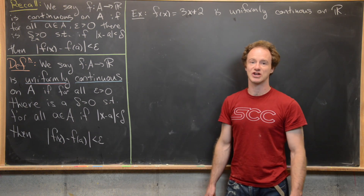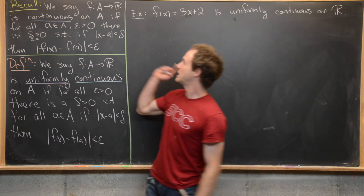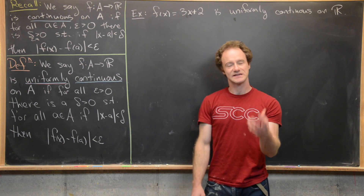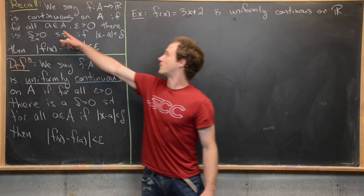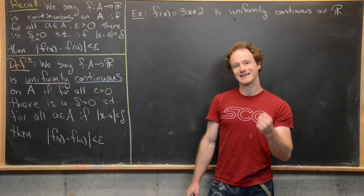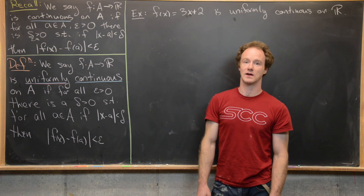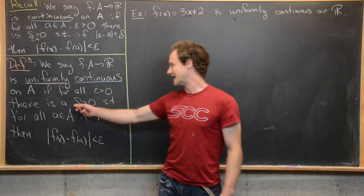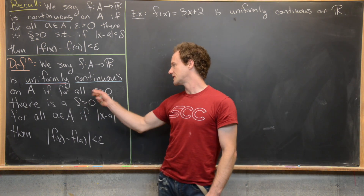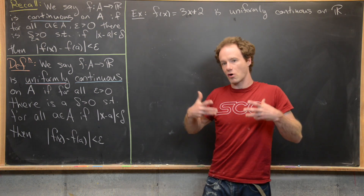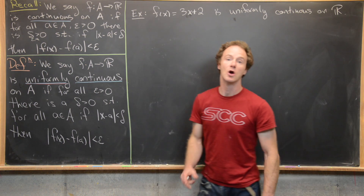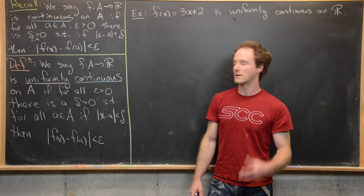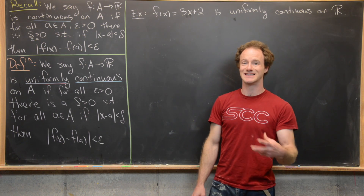Notice there's been an exchange in the order of quantifiers. In the continuity definition, we said 'for all a in A and epsilon greater than zero, there is a delta' — so delta is allowed to depend on a and epsilon. But now we only have 'for all epsilon' before the existence of delta, so this delta is only allowed to depend on epsilon. The delta is brought into existence before we even talk about what point we're checking continuity at. Up in continuity, the delta may depend on the point; down here in uniform continuity, the delta does not depend on any point.